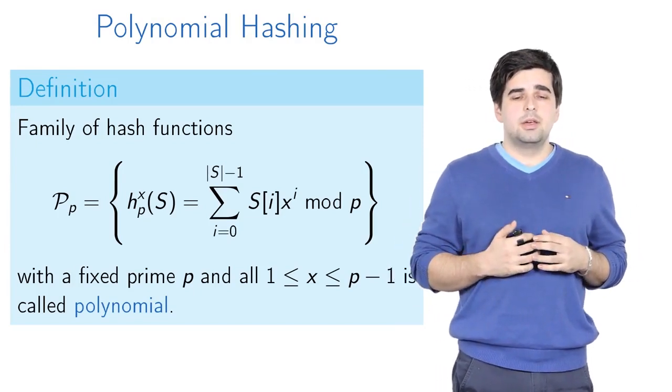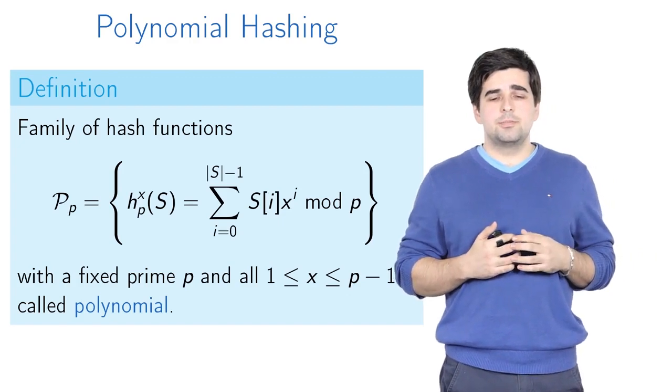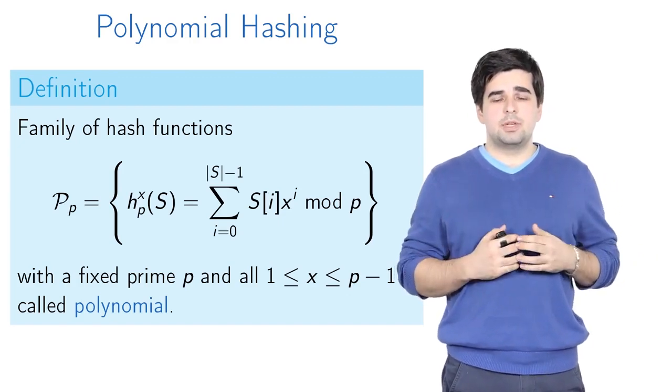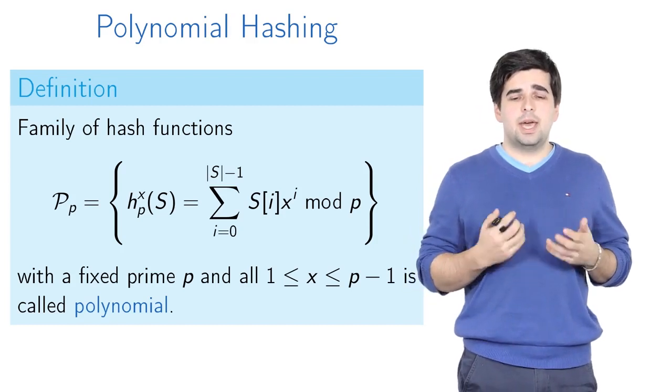Now we introduce a new family of hash functions called the polynomial family of hash functions. Calligraphic P is the family of hash functions, which is indexed by small p (our big prime number) and also indexed by x.